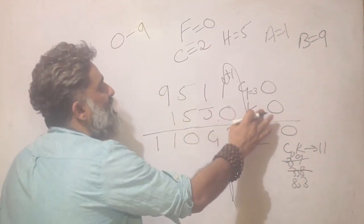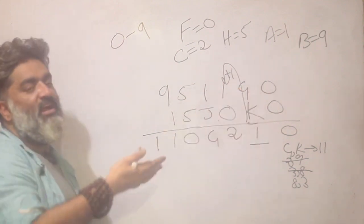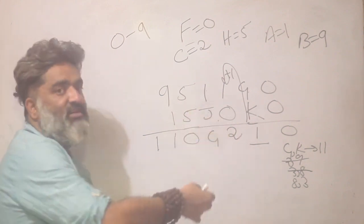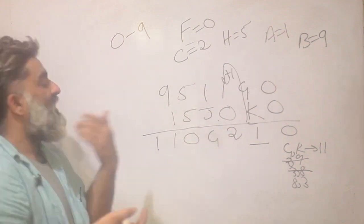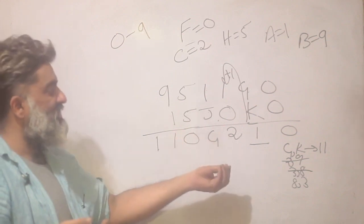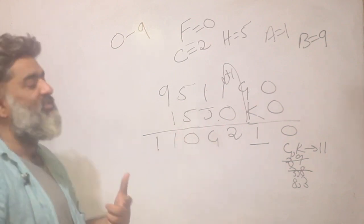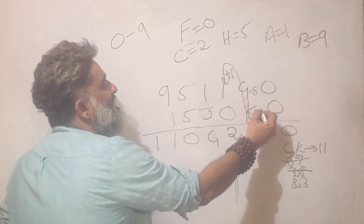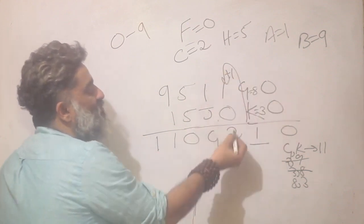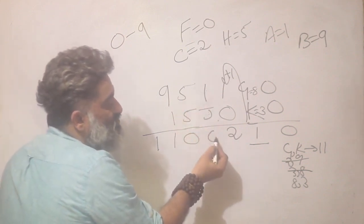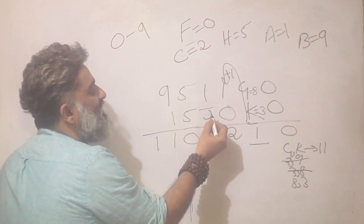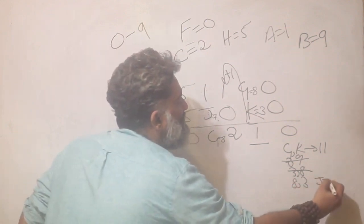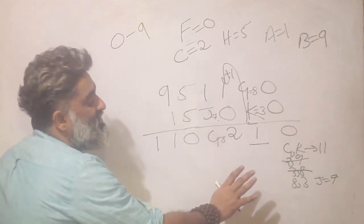This approach of building and testing cases is something we've done many times — you try values and see whether they work or not. So 3+8 doesn't work; try 8+3: G=8, K=3, sum=11, carry 1, C=2 — fine. Now 1+J=G means 1+J=8, so J=7. Is anyone else 7? No conflict, no rule broken. This story works, giving us G=8, K=3, J=7 as one valid solution.